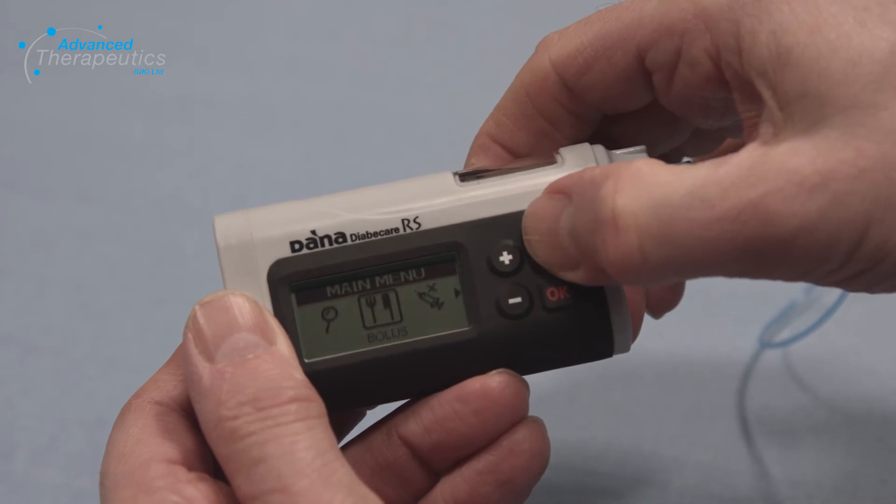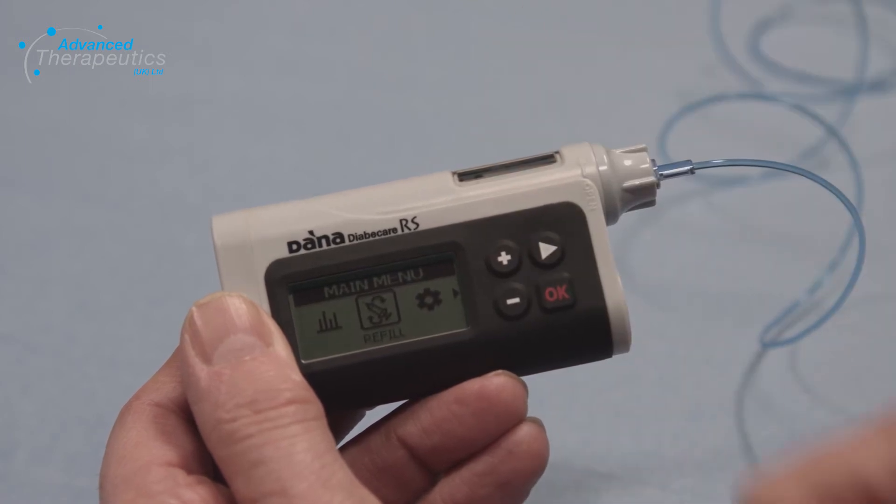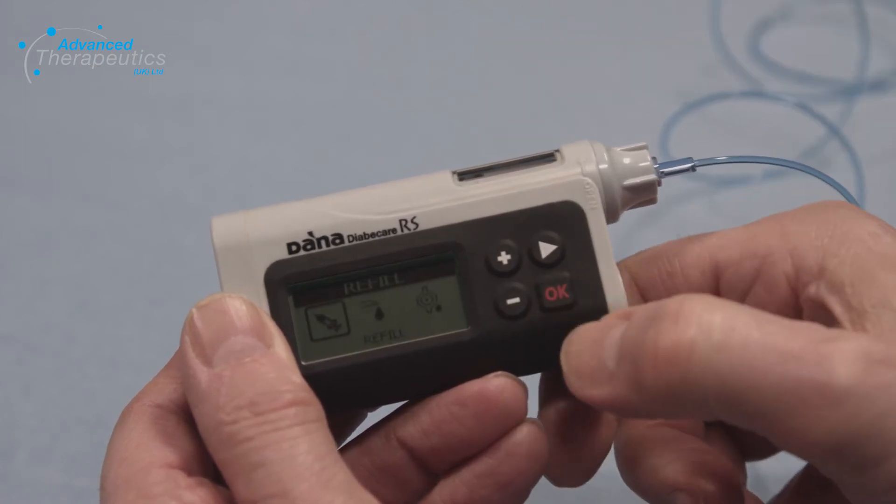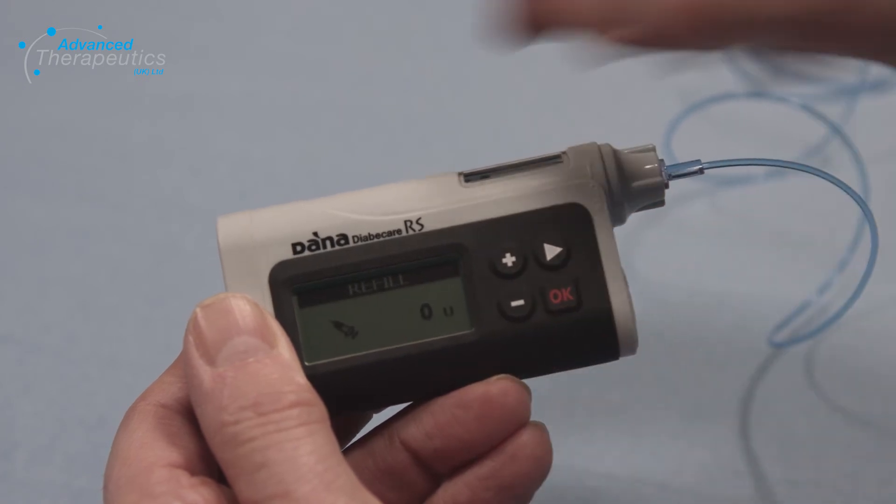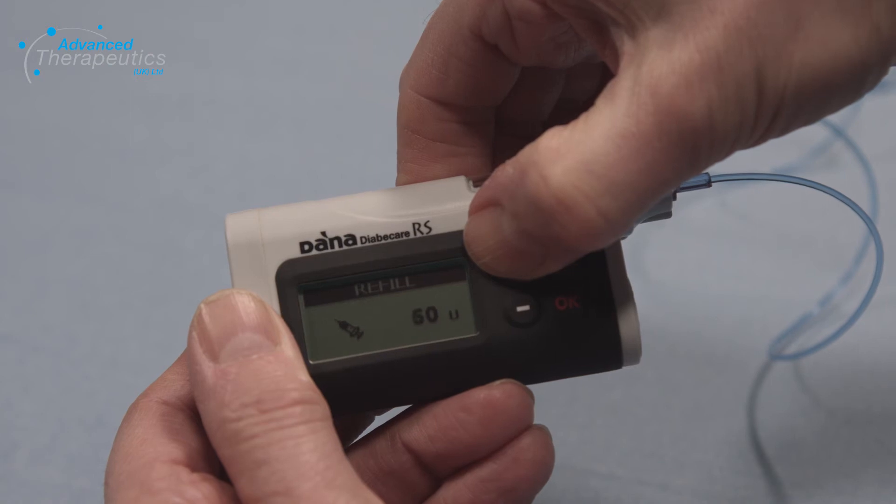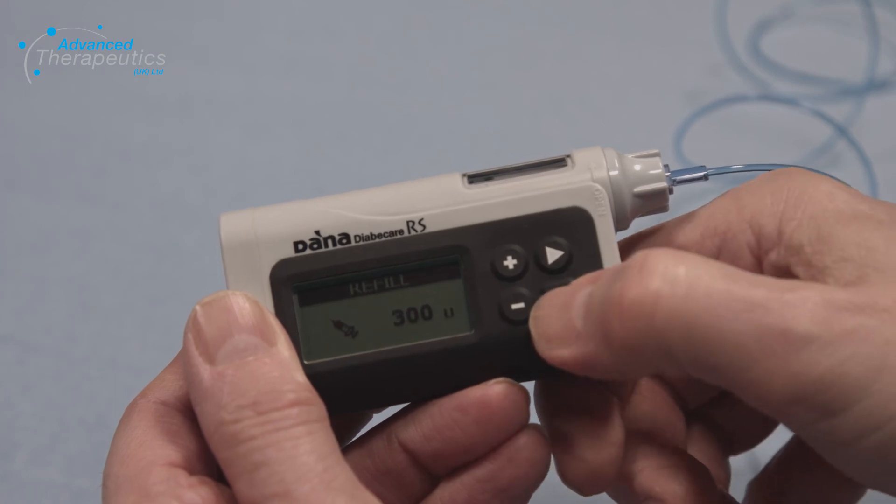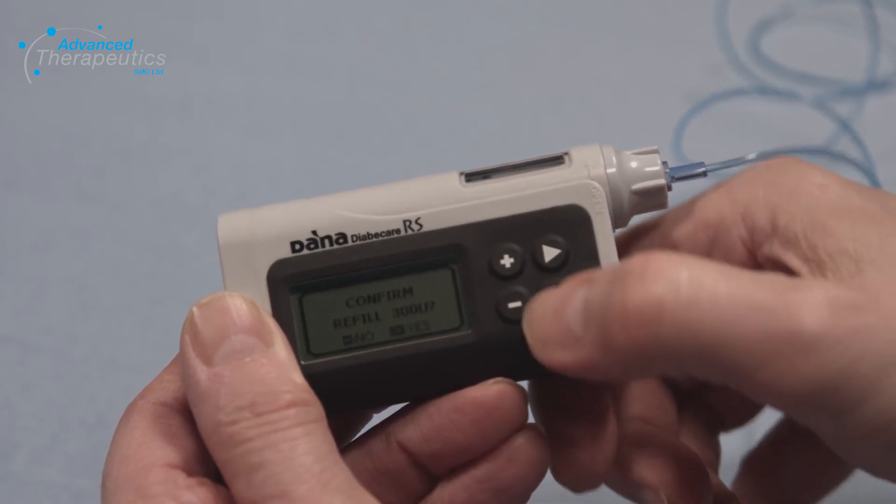Press the arrow key to move to the refill icon, then press OK. Press OK again and then press and hold the plus button. Wait until the correct amount of insulin is showing, up to 300 units. There needs to be at least 50 units in a reservoir for the pump to work. Press OK and then OK again to confirm the amount.